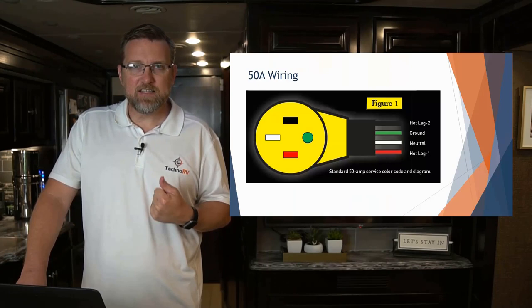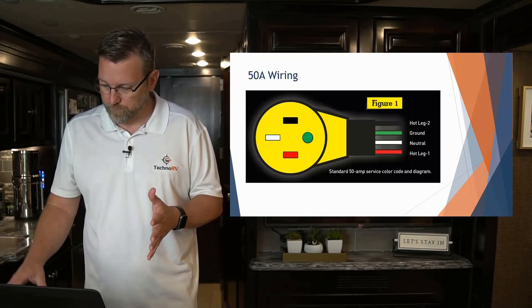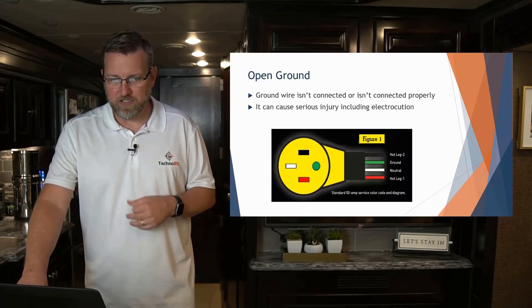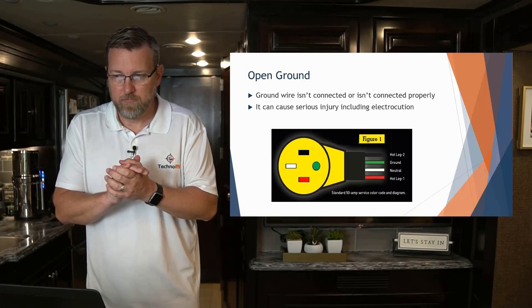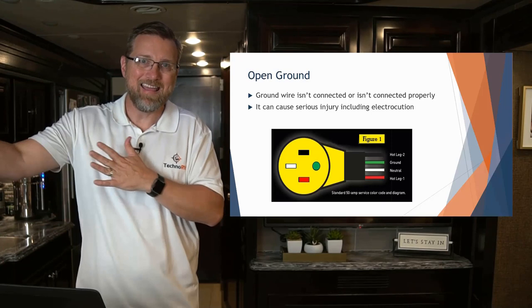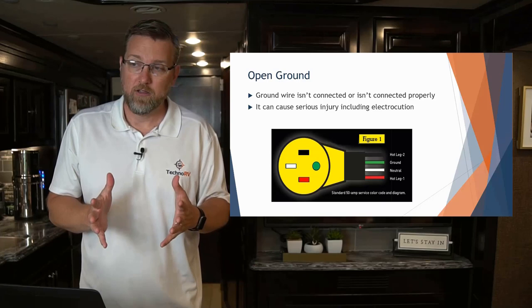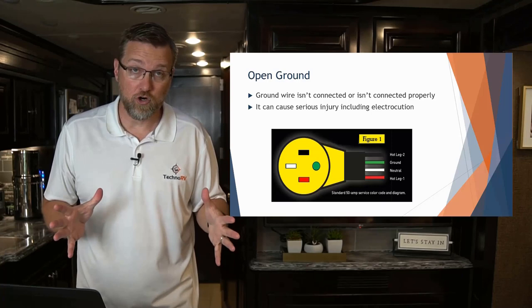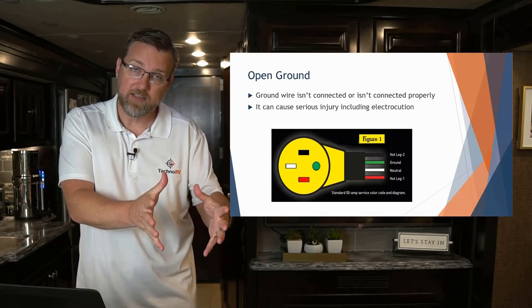On a 50-amp wiring, you've got two hot lines, a ground, and a neutral. If you have an open ground situation, the ground wire is not connected or not connected properly, and it can certainly cause serious injury. A ground is there to expel excess energy — if you have some kind of spike, that excess energy needs to go somewhere. You want it to go to ground. If there's no ground, it's going somewhere else. This means it can charge something in your RV that shouldn't be charged with electricity, creating an electrocution situation. You need a proper ground, and the pedestal should have one.